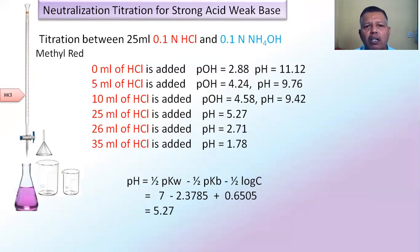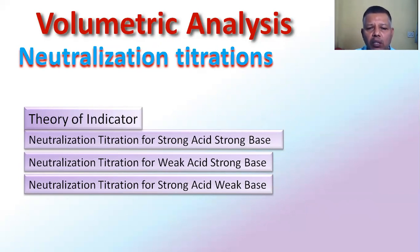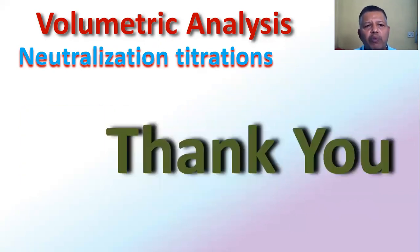In this way, for neutralization titrations for different examples, we have seen the theory of indicators and neutralization titration for strong acid with strong base, weak acid with strong base, and strong acid with weak base. This concludes the overview of neutralization titrations in volumetric analysis.